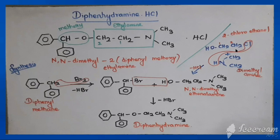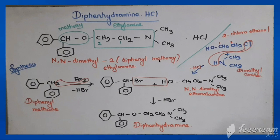N,N-dimethylethanolamine is prepared by the addition of 2-chloroethanol with dimethylamine; the Cl is removed, so the N(CH3)2 group is added to that carbon, yielding N,N-dimethylethanolamine. When this reacts with the bromo derivative of diphenylmethane, HBr is removed and the group -O-CH2-CH2-N(CH3)2 is added to that carbon, giving diphenhydramine.